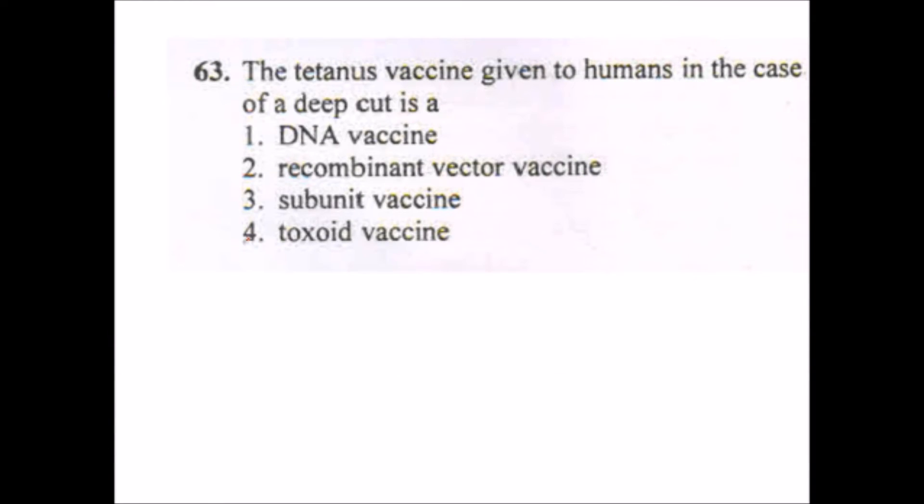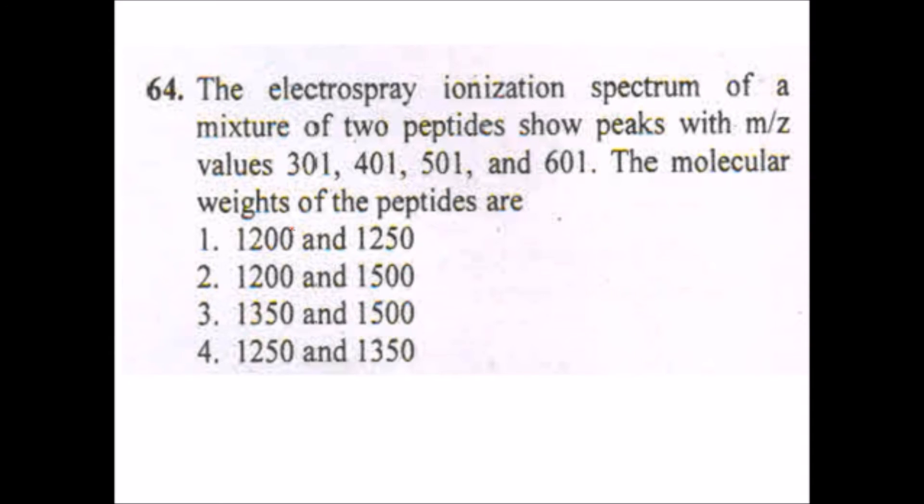You can take the example of mango which has very large seed and only one. So the answer will be three. Next question: the tetanus reaction given to humans in the case of deep cut is, without any doubt, it will be a toxoid vaccine.